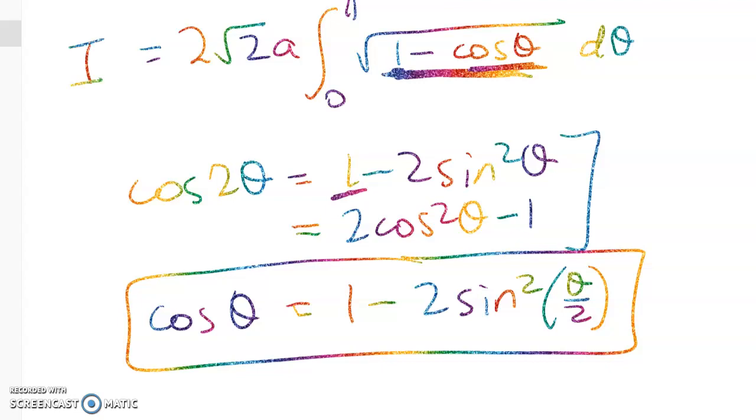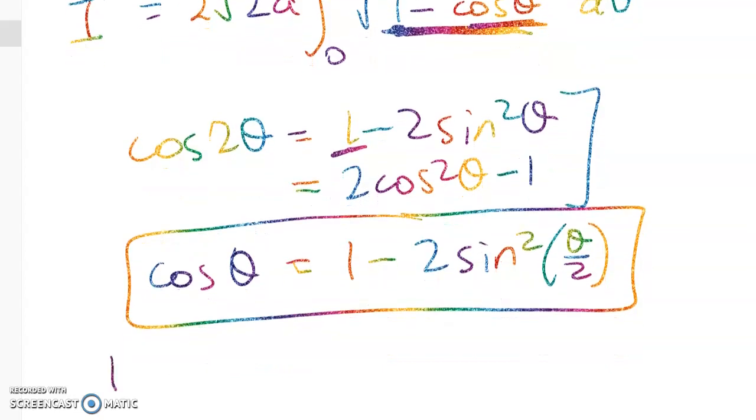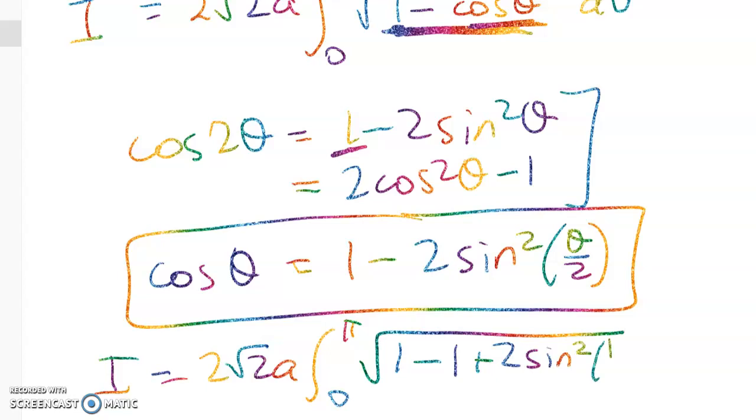So this thing here we'll call that i for integral. So i is equal to 2√2 a. I bet no one's watching by now because you've all seen what to do. That's cool.